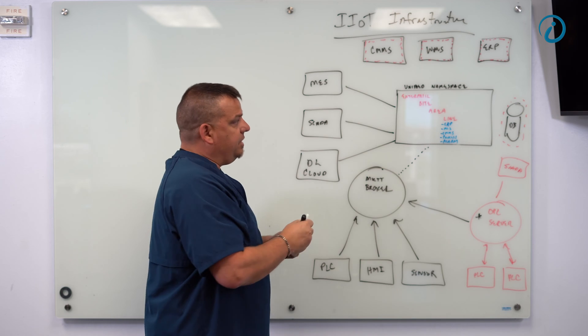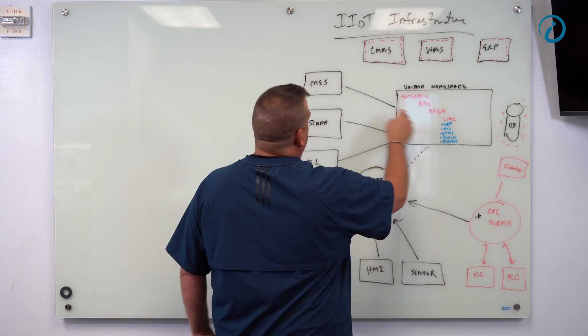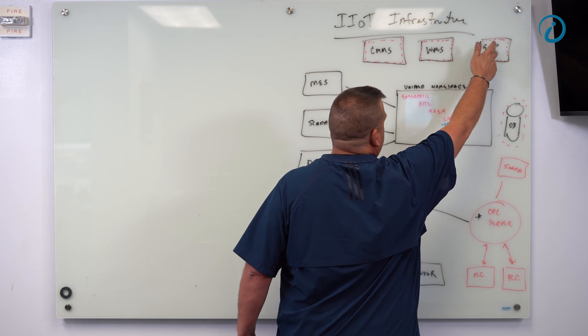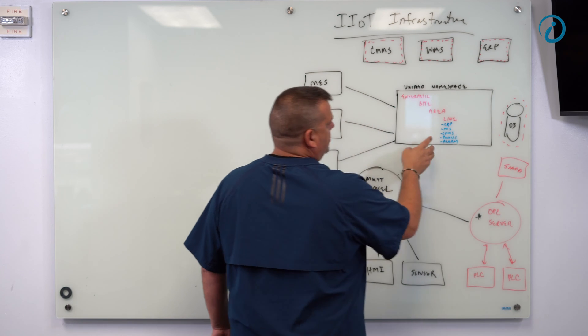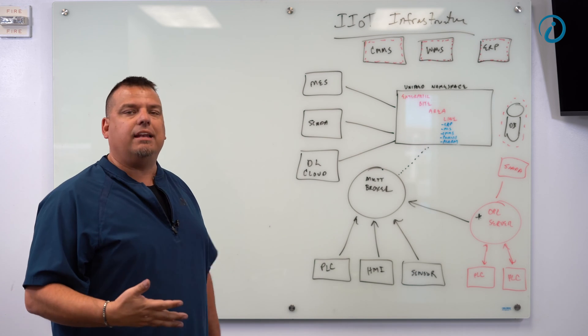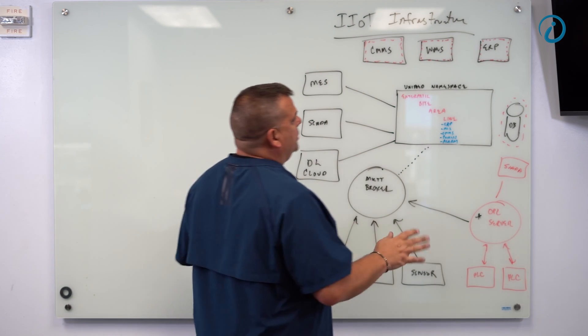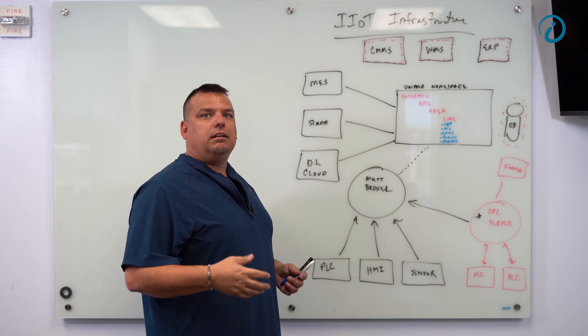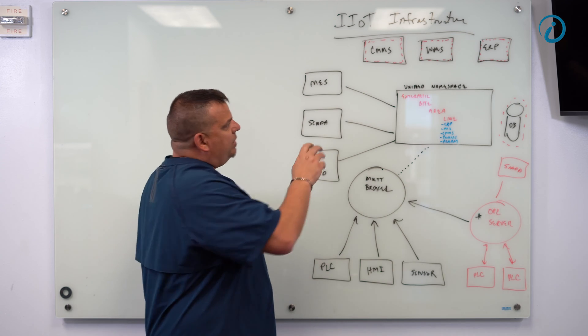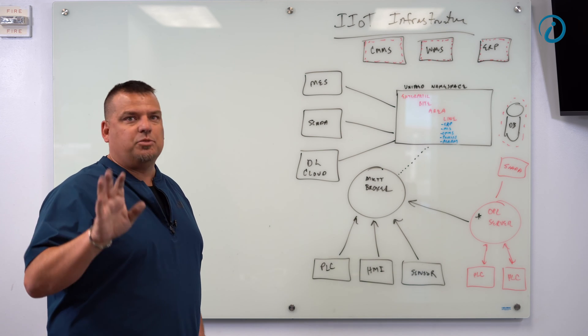So I want to explain what that namespace looks like real quick. So we generally use the IS-895 standard, which is Enterprise Site Area Line. So for each node in our system, MES, SCADA, our data lake, our CMMS, our warehouse management system, our ERP, and our SCADA system, we have a location inside of our unified namespace for the data from that information. And I'm going to get more technical than normal here. One of the biggest challenges of having a single source of truth in a plant, in a business unit, or in an enterprise is every one of these pieces of software that you buy off the shelf has its own namespace. And this is what I mean.